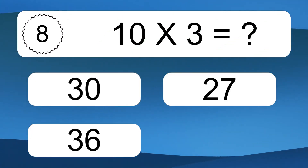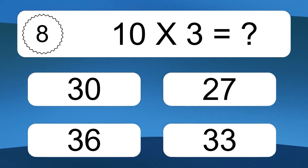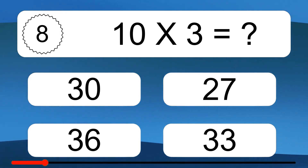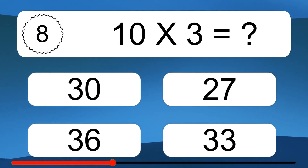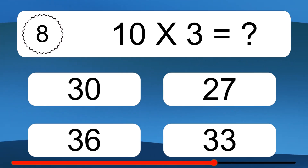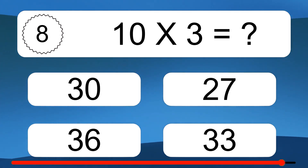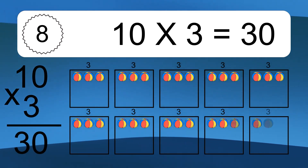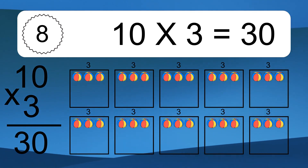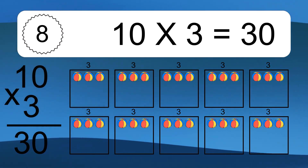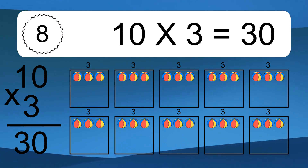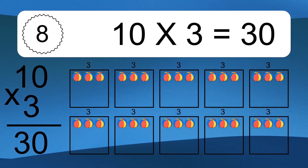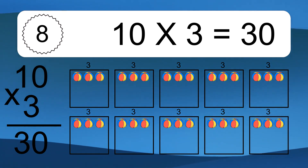Ten times three equals what? Ten times three equals thirty. We have ten boxes, and each box has three colorful balls inside. If you count all the balls in all the boxes together, you will have ten times three balls. This equals thirty balls.